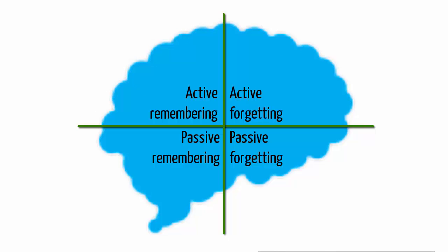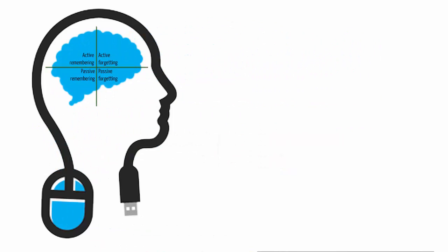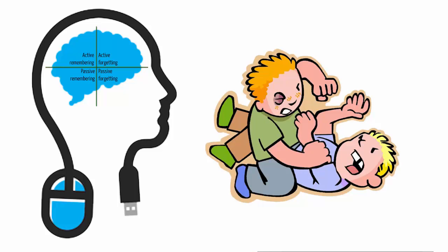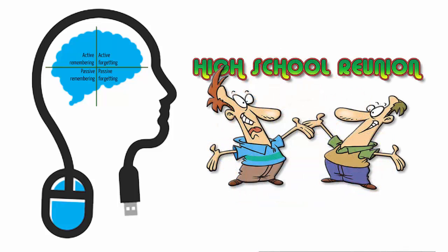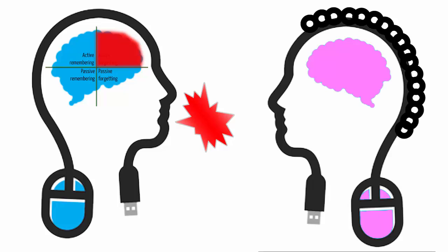Now, before you throw this matrix out the window, consider that we're all subject to it — this operates in our personal memory too. You've forgotten things carelessly. You've also refashioned memories. That classmate who hurt your feelings decades ago becomes a long-lost friend when you meet him at a school reunion. You might have painful memories that you want to forget, and you might even yell at someone for reminding you, like your wife.